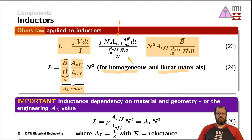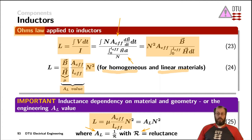The inductance is scaled by the number of turns squared. The Al value therefore represents all the magnetic behavior of a magnetic material, including its geometry. Physicists often use the reciprocal value of the Al value and call that reluctance. Finally, the physical definition of the inductance is summed up here, and for practical engineering use it is often abbreviated down to the Al value times the number of turns squared.